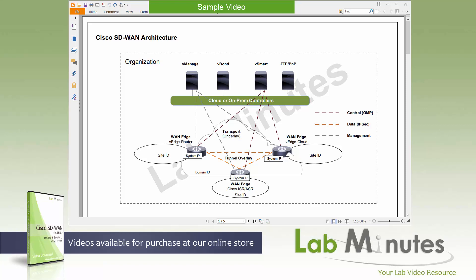In our last few video series, we looked at Cisco software-defined network technologies. We began our journey in the data center with Cisco ACI, and we had two video series on that — the basic and the advanced. In the last video series, we looked at the Cisco latest SDN technology in the campus access, which was the software-defined access with the DNA center. Now in this video series, we'll continue our theme of SDN, and this time it's going to be on the software-defined wide area network, or SD-WAN.